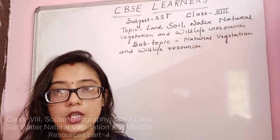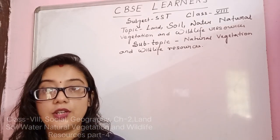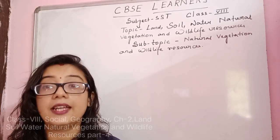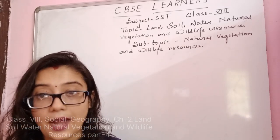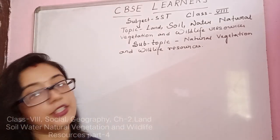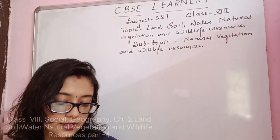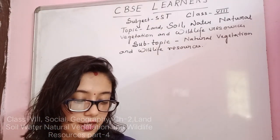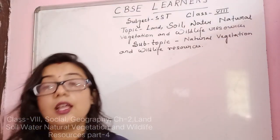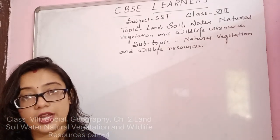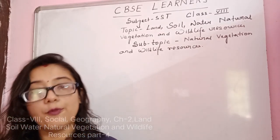Mona picked up a bag and exclaimed, 'This is a beautiful handbag.' 'Yes, it is made from jute,' the teacher said. So jute is a type of natural resource we get from plants and we can consider it as natural vegetation.